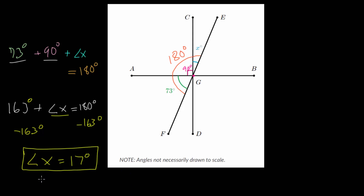Another way to look at this: since the total angle is 180 and this is a 90-degree angle, we can subtract it away and say that angle x and the 73-degree angle must add up to 90 — they are complementary. So x plus 73 equals 90, giving x equals 17 degrees. Complementary angles don't have to be next to each other; they just have to add up to 90 degrees.